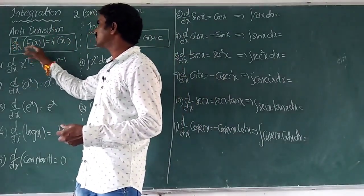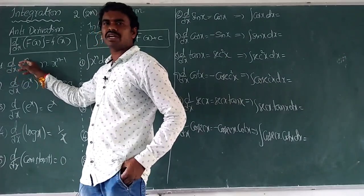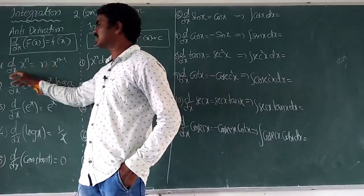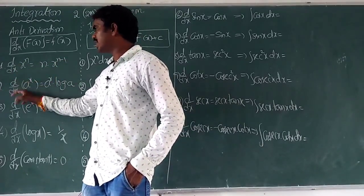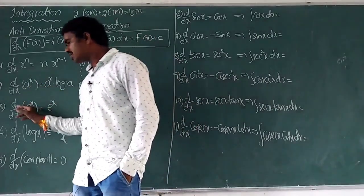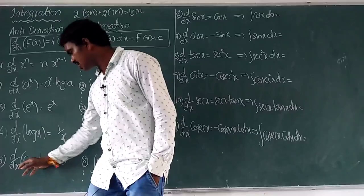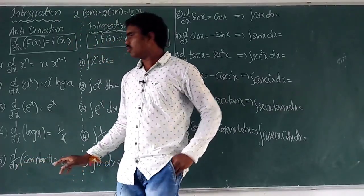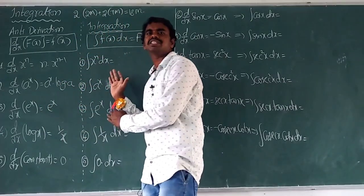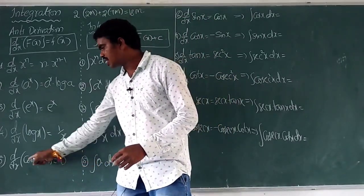Anti-derivative means differentiation — that is, the derivation of some function gives another function. For example, d/dx of x^n gives n·x^(n-1). Similarly, d/dx of a^x is a^x·log(a). Derivation of e^x is e^x, derivation of log(x) is 1/x, and derivation of a constant is 0. Using these derivation formulas, we can write the integrations.